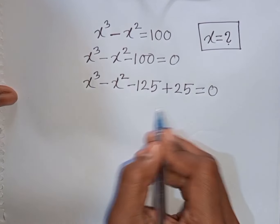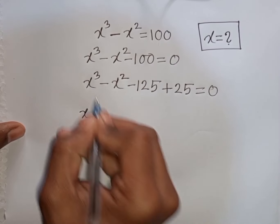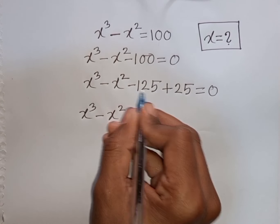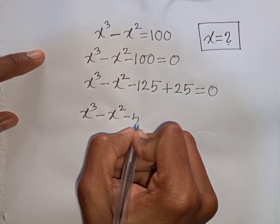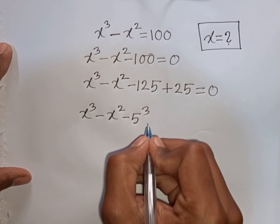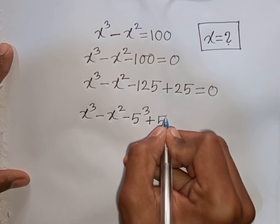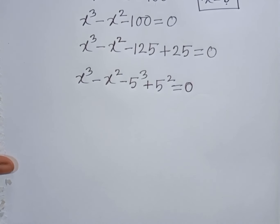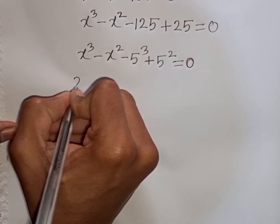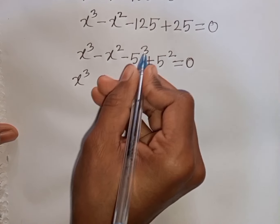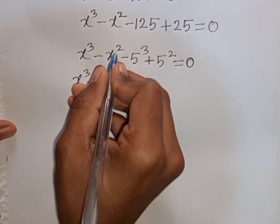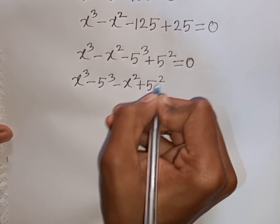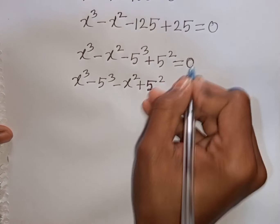Most of the time you can understand such processes. Now we have x³ - x². Then minus 125 can be written as minus 5³, and plus 25 is the same as plus 5². Then equals 0.